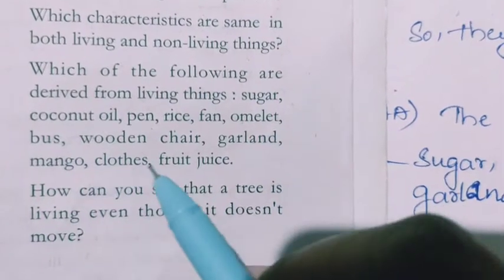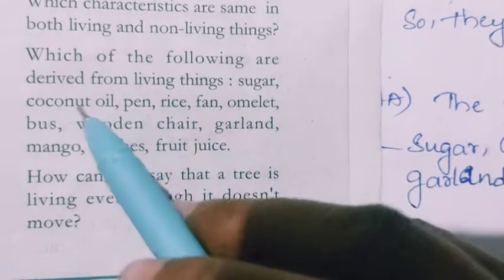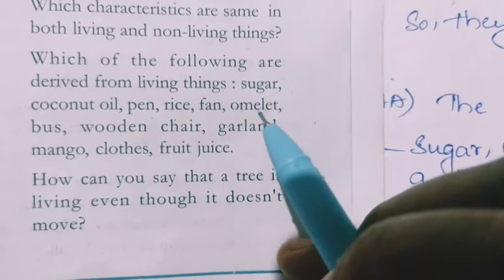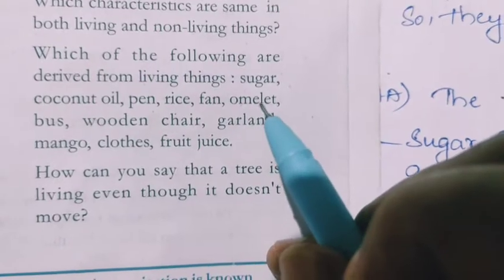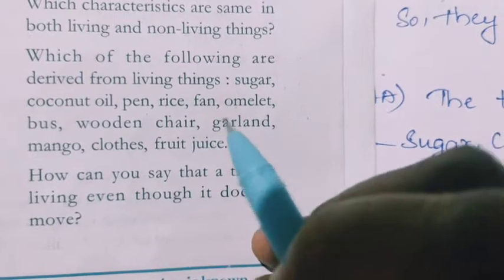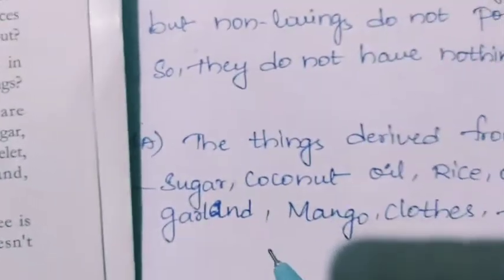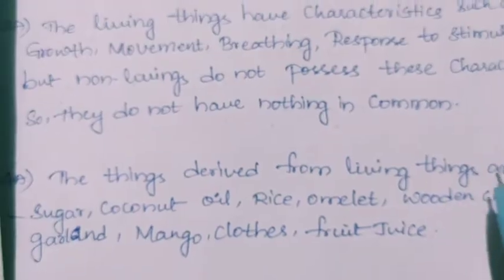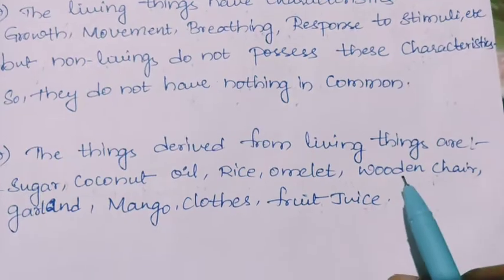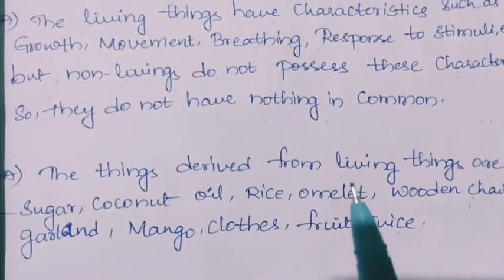Sugar, coconut oil, rice are obtained from plant sources. Omelet is obtained from the egg, which we get from animals. Wooden chair is obtained from plants. Garland is flowers obtained from plants. So the things derived from living things are sugar, coconut oil, rice, omelet, wooden chair, garland, mango, cloths, and fruit juice.